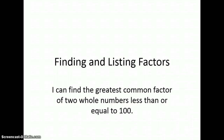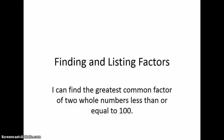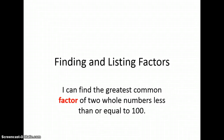Hi guys, today we're going to quickly review finding and listing factors. The I can statement we're working on doesn't really go with this unit, but we are going to need to know about factors in order to continue learning about the distributive property. The I can statement we're working on is: I can find the greatest common factor of two whole numbers less than or equal to 100. For this lesson, we are focusing on the word factor.